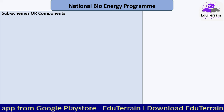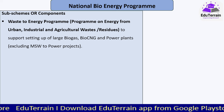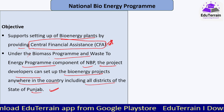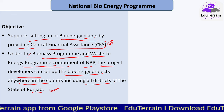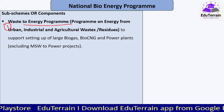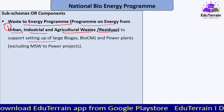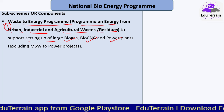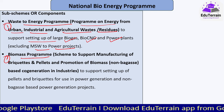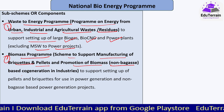There are three major components under the National Bioenergy Program. First is the Waste to Energy Program, earlier called the Program on Energy from Urban, Industrial, and Agriculture Waste or Residues. This program supports setting up of large biogas, bio-CNG, and power plants. Second is the Biomass Program, earlier called the Scheme to Support Manufacturing of Briquettes and Pellets and Promotion of Biomass Non-Bagasse Based Co-generation in Industries.